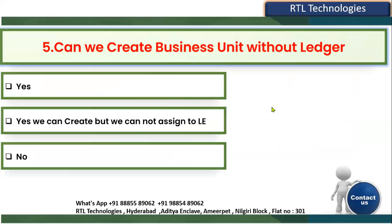The fifth and last question: can we create a business unit without a ledger? When configuring enterprise structure, we can use the Enterprise Structure Configurator wizard or a manual process. Most implementations use the manual process to configure all organizations one by one and define the hierarchy. The question is: if the ledger has not been created yet, can we still create a business unit directly?